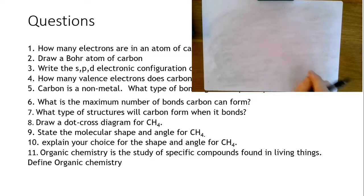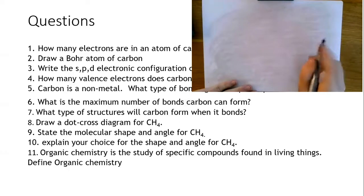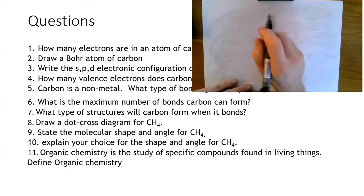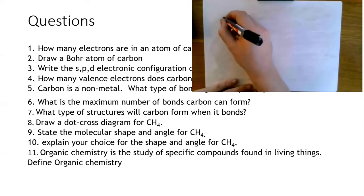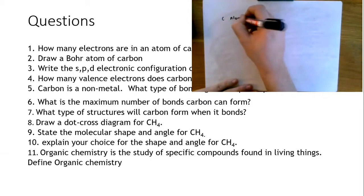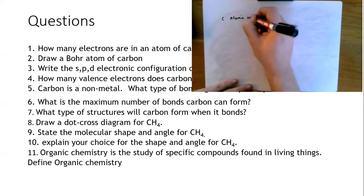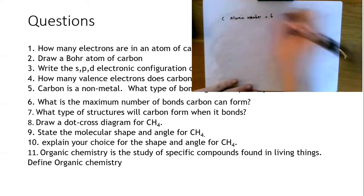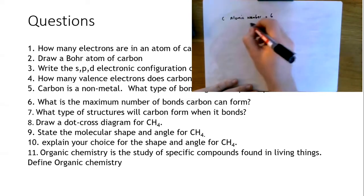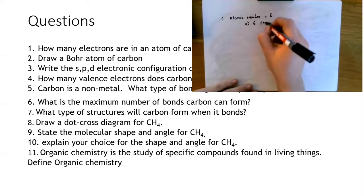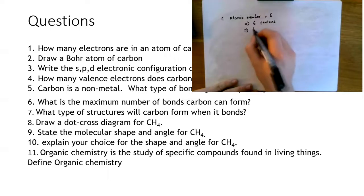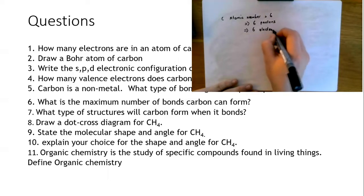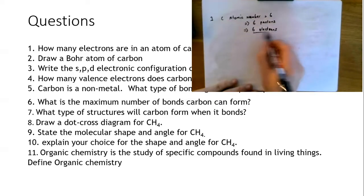How many electrons are in an atom of carbon? Well, atoms are neutrally charged, so the number of electrons and the number of protons are the same. We get the number of protons from carbon's atomic number, which equals six. So there are six protons, and therefore there are six electrons.